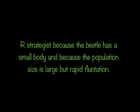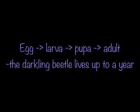The beetle is an r-strategist because it has a small body with a large population but with rapid fluctuation. Darkling beetles live up to a year. They start off as eggs, turn into larvae, then pupae, and then become adults.